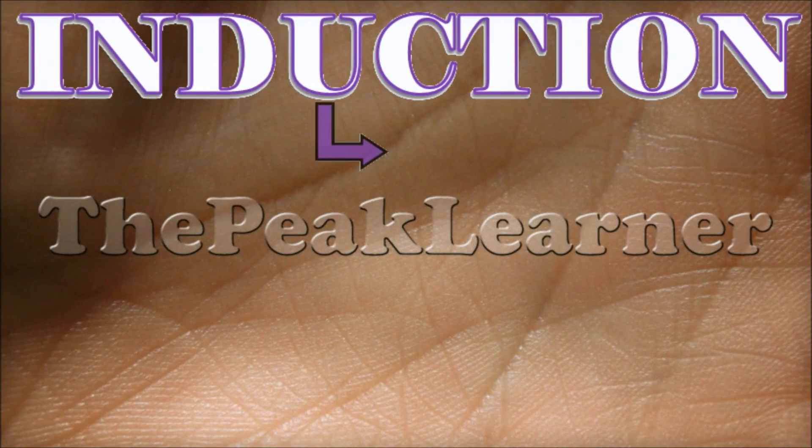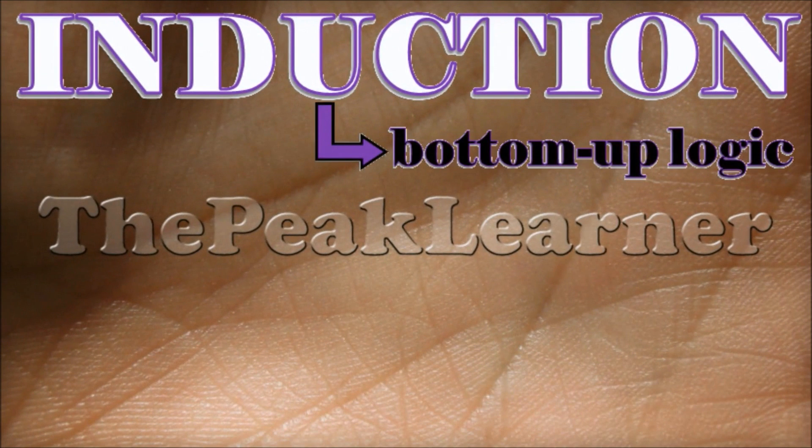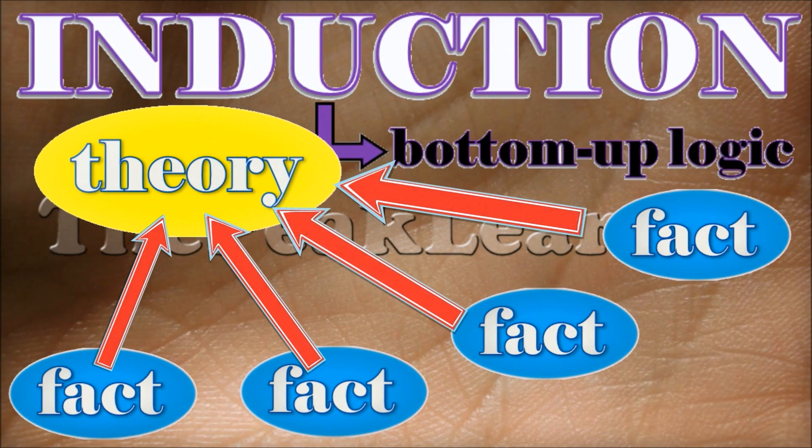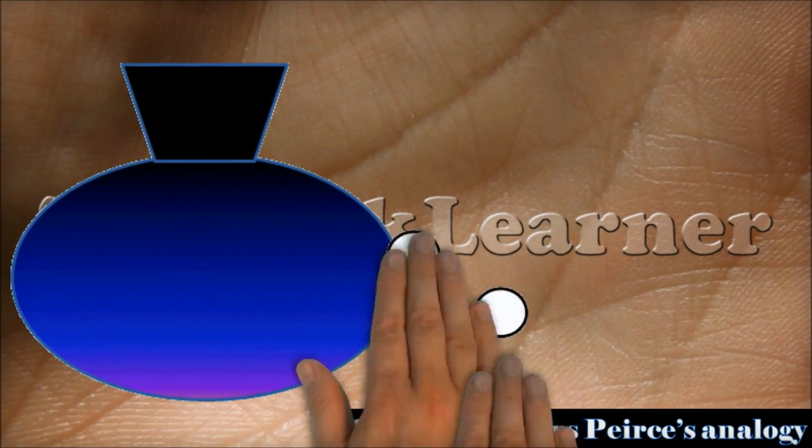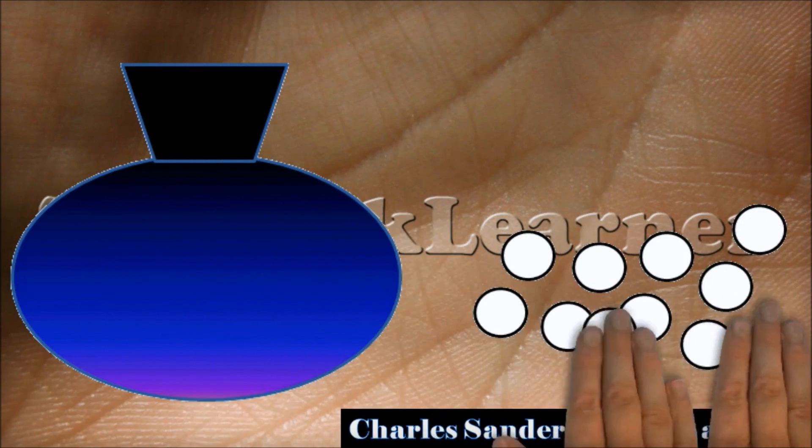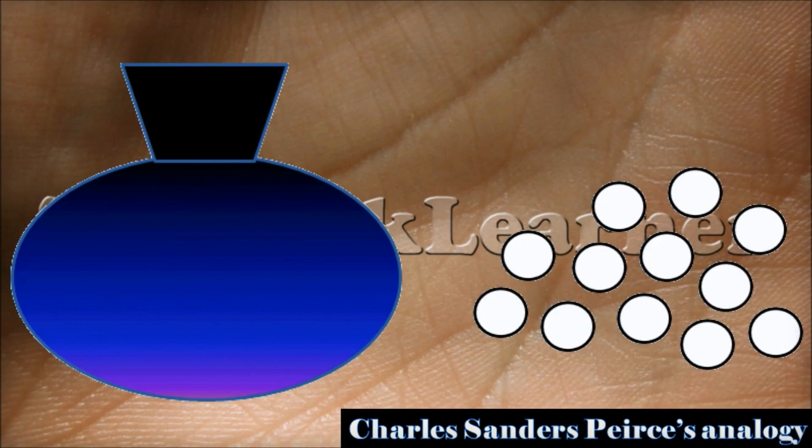With induction, also called bottom-up logic, it's the opposite. You go from the specific to the general. For example, if you take 5, 10, or 15 beans from your bag and they're all white, then you can infer that all the beans in your bag are white.